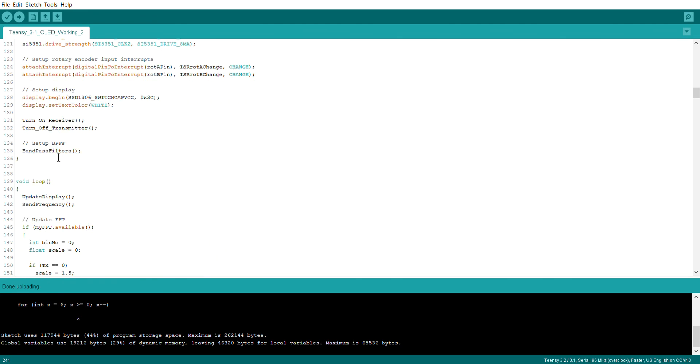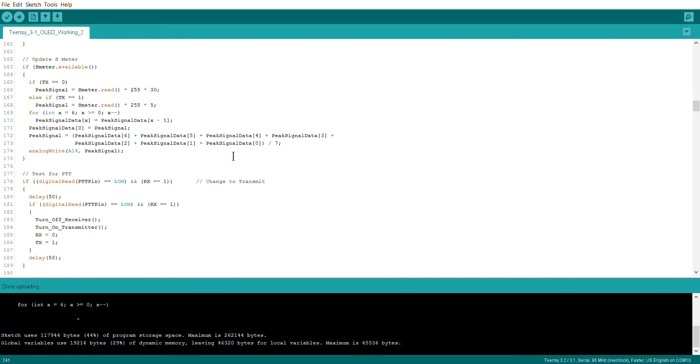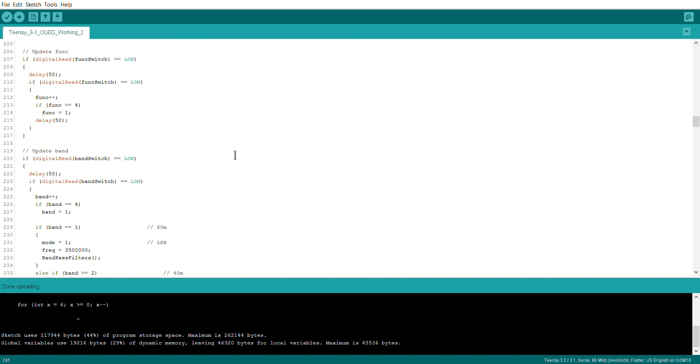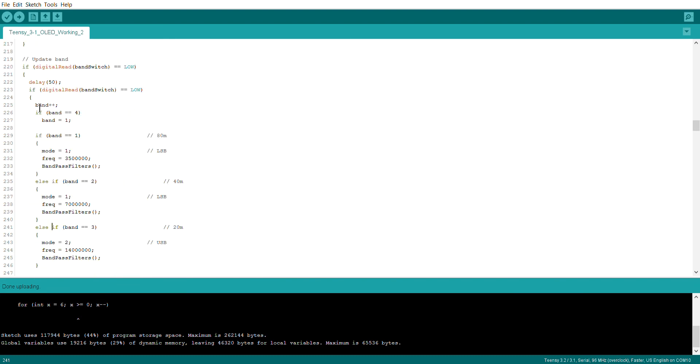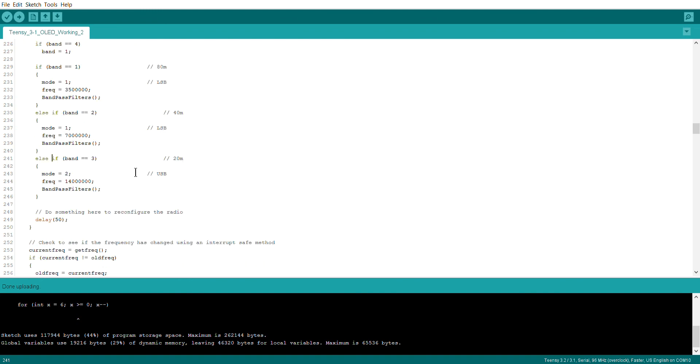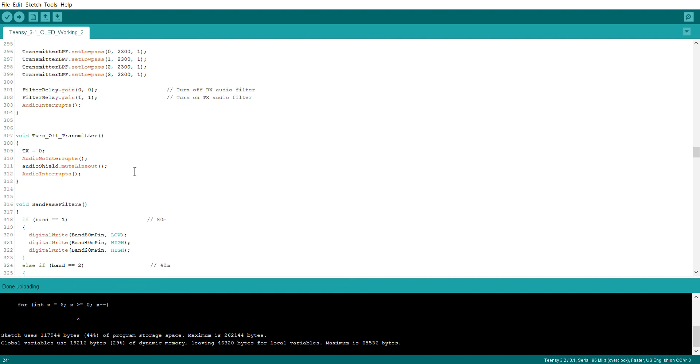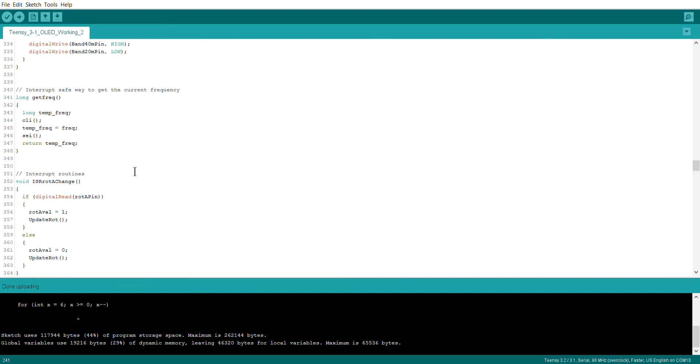And what I've created here is a function called bandpass filters, which gets called whenever the band gets changed. So in this particular case, if the band switch is selected, then the mode gets changed, the frequency gets reset to the start of that particular band, and then the bandpass filters function gets called.